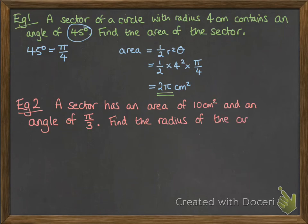Next example. A sector has an area of 10 centimeters squared and an angle of π by 3. We want to find the radius of the circle.